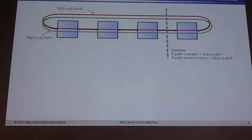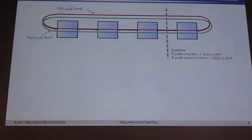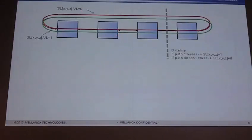Let's look at just my X direction. What the algorithm does is it draws what's called a dateline, all the way through all of the X coordinates. If a packet crosses the dateline, I use a particular service level. If it doesn't cross the dateline, I use another service level. In InfiniBand, we have something called virtual lanes, and each of these virtual lanes has its own dedicated set of buffers. So if I cross the dateline, I use VL zero; if I don't cross the dateline, I use VL one. This means there's only one particular set of buffers that crosses that dateline, which breaks my loop.